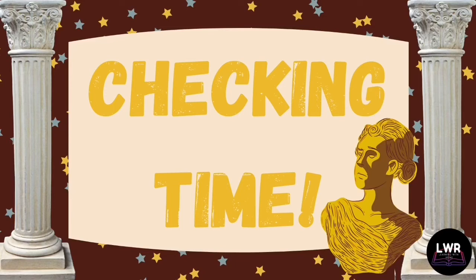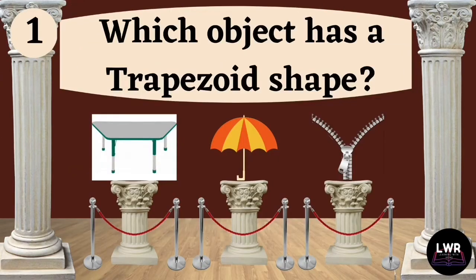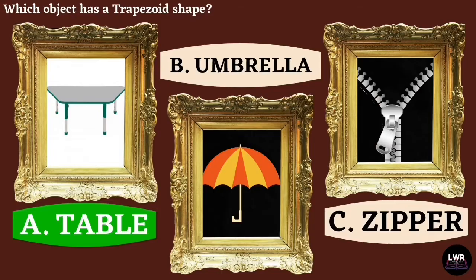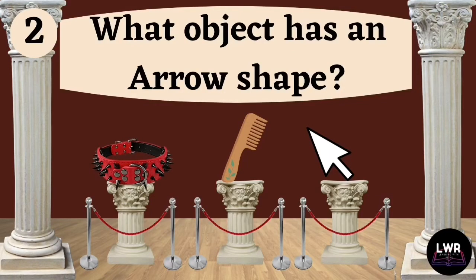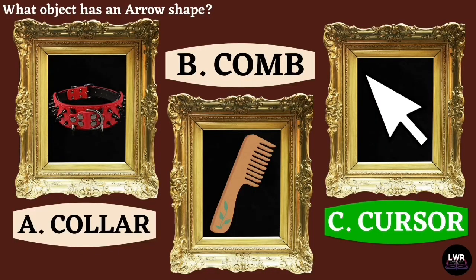Checking time! Question number one: which object has a trapezoid shape? The correct answer is letter A, table. Question number two: what object has an arrow shape? The correct answer is letter C, cursor.